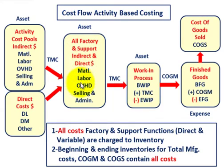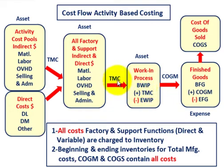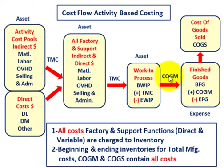Our material, labor, overhead for indirect and direct amounts, plus all those support functions — lumped together as selling and administrative costs — make up our total manufacturing costs. Those total manufacturing costs then go into our work-in-process inventory account. We take our beginning work in process, add all those total manufacturing costs, and subtract our ending work in process. Beginning WIP plus total manufacturing costs minus ending WIP gives us our cost of goods manufactured.